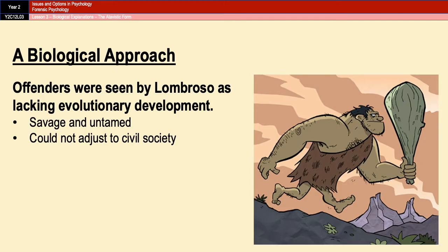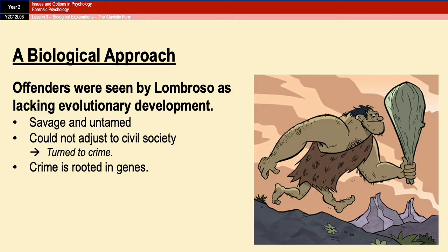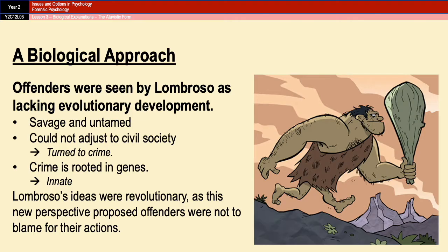As a result of not being able to adjust, they would then inevitably turn to crime, almost because crime is something that is as primitive as they are — it matches their nature. Lombroso saw offending behavior as a natural tendency that is rooted in genes. The idea that offending behavior is innate and therefore an offender was technically not to blame for his or her actions was a brand new and revolutionary perspective at the time, because up until then, crime had been seen as more of a moral issue — people who committed crimes were seen as immoral rather than it being in somebody's nature.